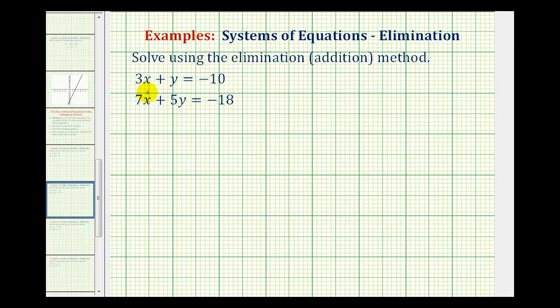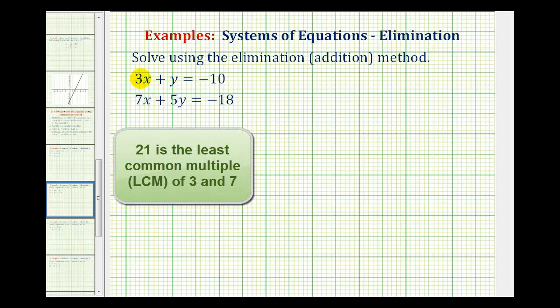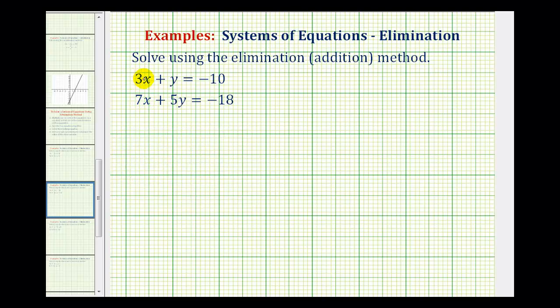If we look at the x terms, since we have 3x and 7x, we'd have to have a negative 21x and a positive 21x for them to be opposites. So we'd have to multiply this first equation by either 7 or negative 7 and the second equation by a positive 3 or negative 3. We'd have to multiply both equations by a constant.